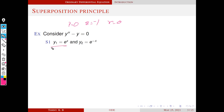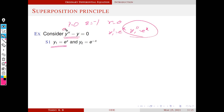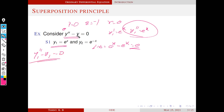You can easily verify. For example, consider y1: y1 dash is again e raised to x, and y1 double dash is again e raised to x. Substituting all these values into the differential equation, the left-hand side becomes e raised to x minus y1, which is e raised to x, and that equals zero. So y1 satisfies this differential equation — that is, y1 double dash minus y1 equals zero.